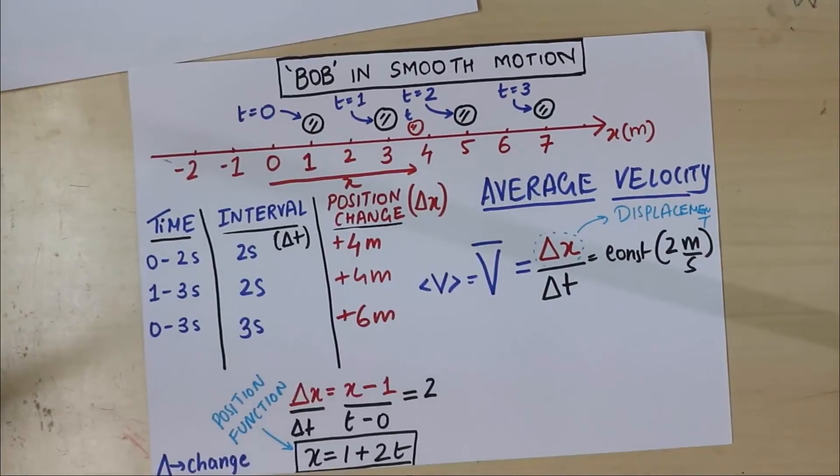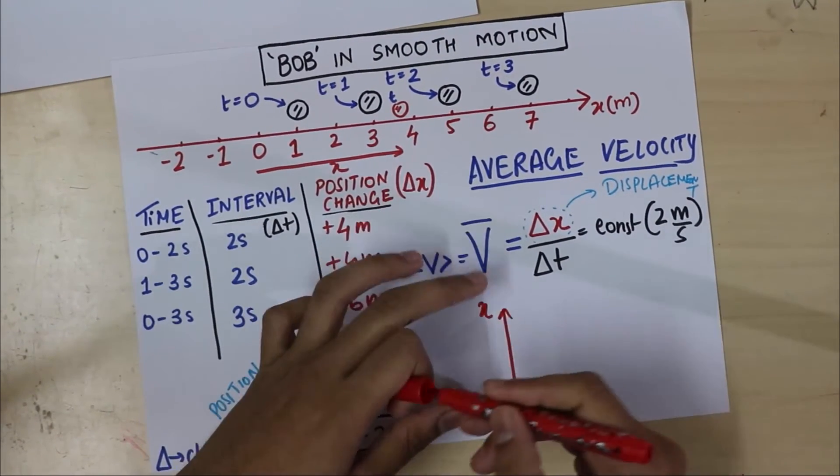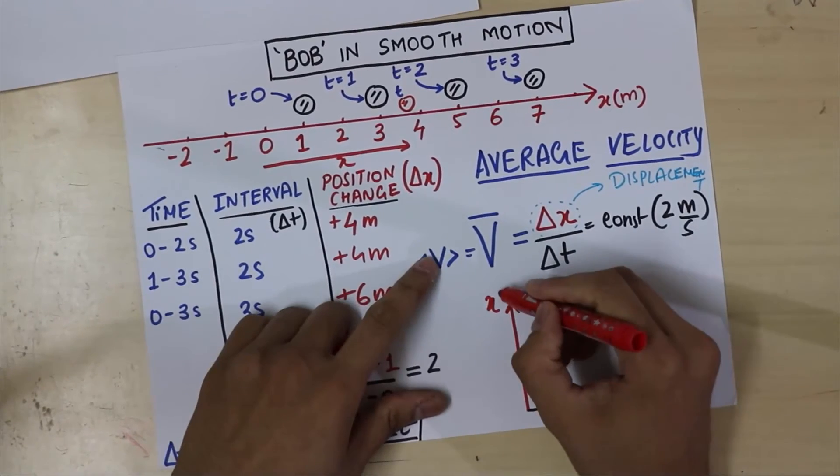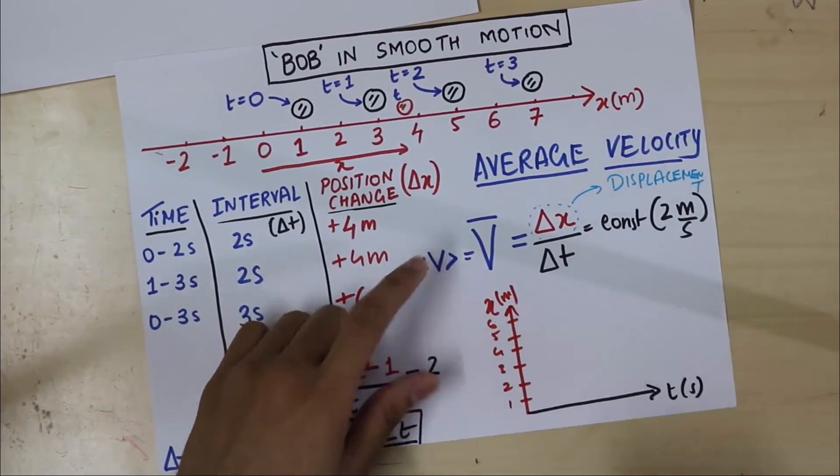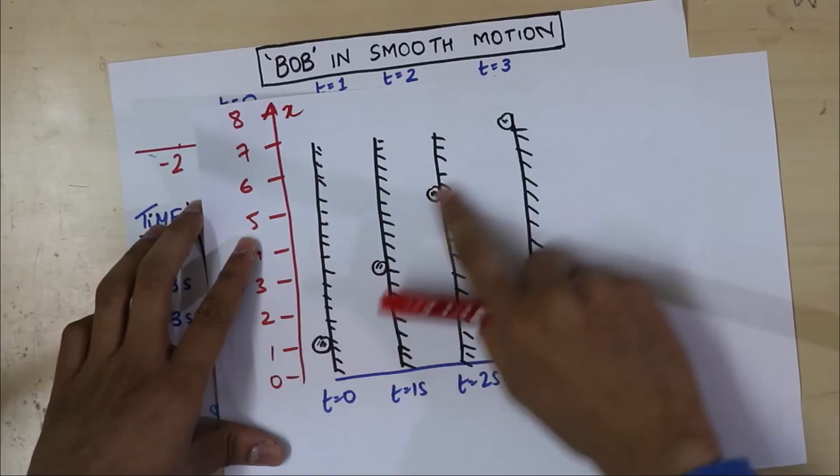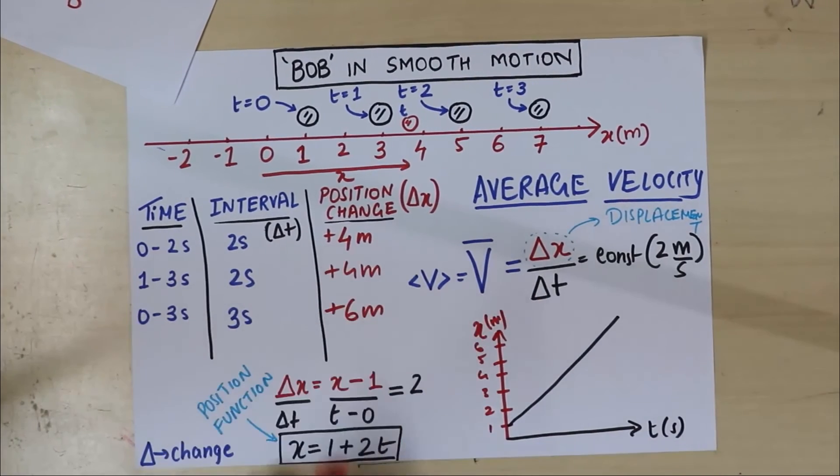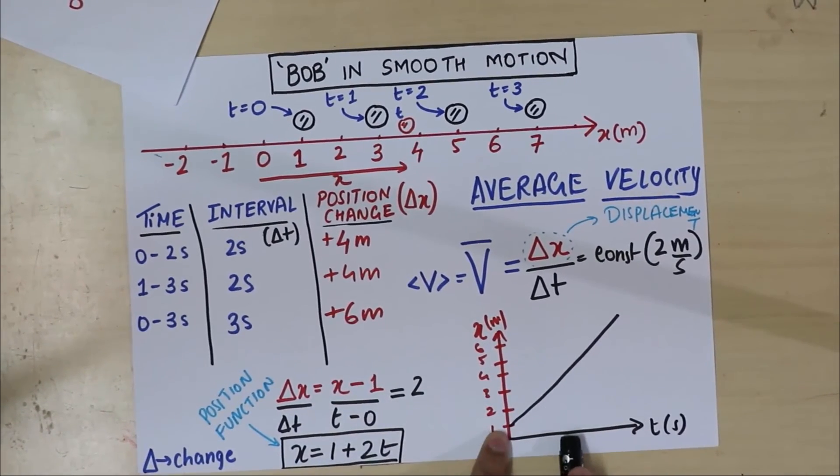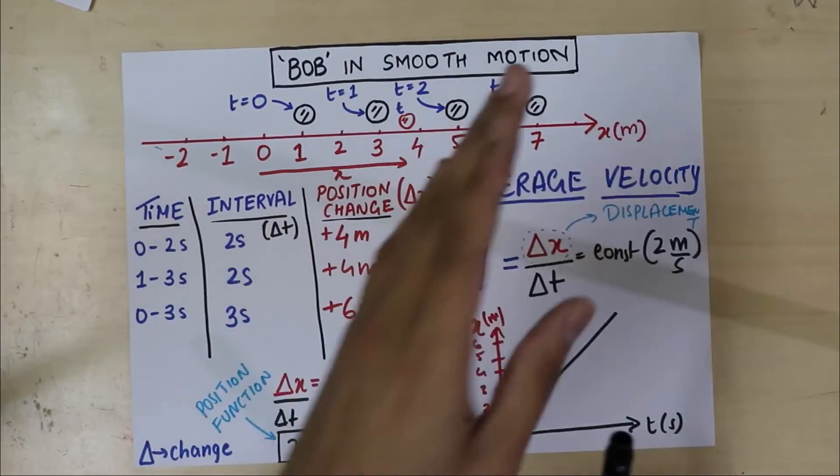So I'm going to draw the miniature version of that graph over here. So I want to fit this whole thing in my small sheet over here. So here is my X. And here is my time axis. So here is time in seconds. And this is in meters. And let me just put 1, 2, 3, 4, 5, 6, whatever. So what does the graph look like? Look at this. The graph is a straight line this way. So let me draw that over here. This is what the graph looks like.